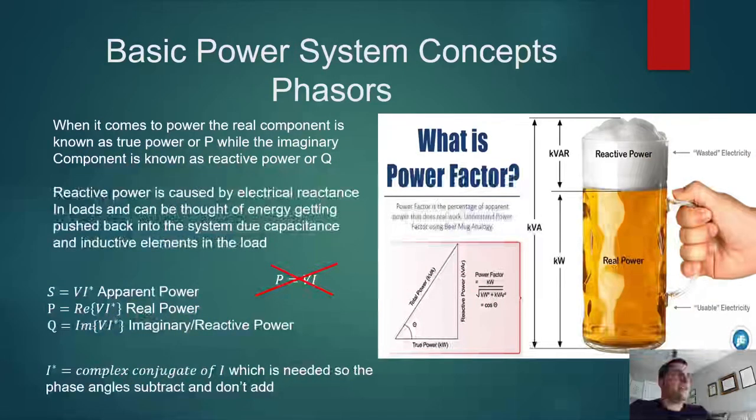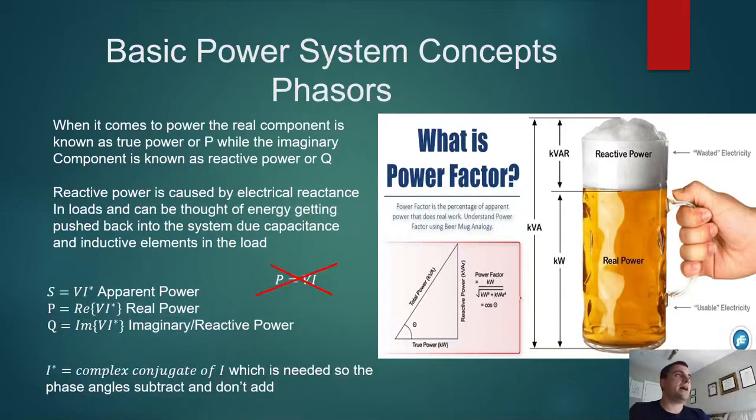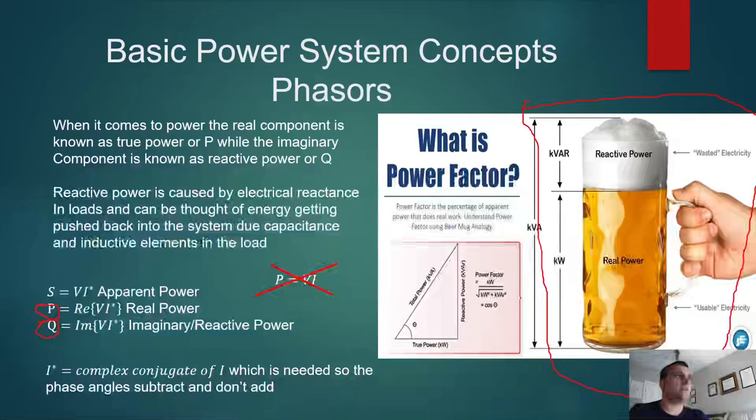That does have consequences for our math. We can no longer use the simple equation power equals voltage times current. That does not work anymore. Instead, we have three concepts now. We have apparent power, real power, and imaginary power. Your apparent power is your voltage times the complex conjugate of the current, which is broken into two components. Your real power, which is what you think of when you think of electricity, and your imaginary power, which can kind of be thought of as power that is basically being bounced back into the grid because of things like inductances and capacitances on your load. The beer model is often used as a way of thinking about it, and optimizing this is a big part of being a transmission engineer.